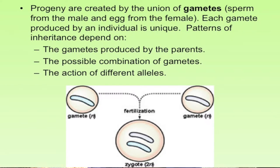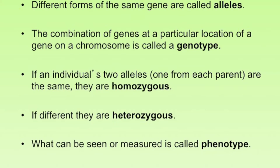Different forms of the same gene — for example, the gene for background color in cattle, whether red or black — are called alleles. The combination of these alleles at a particular location on a chromosome is called the genotype. If an individual's two alleles, one from each parent, are the same — say both are the red variation of the background color gene — they are homozygous. If they inherit two different versions of that gene, those individuals are called heterozygous.